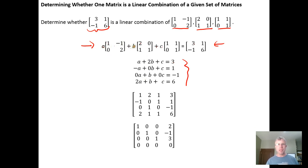Minus A plus 0B plus C equals 1, that generates equation 2. A times 0 plus B times 1 plus C times 0 equals negative 1 generates equation 3. And 2 times A plus B times 1 plus C times 1 has to equal 6.